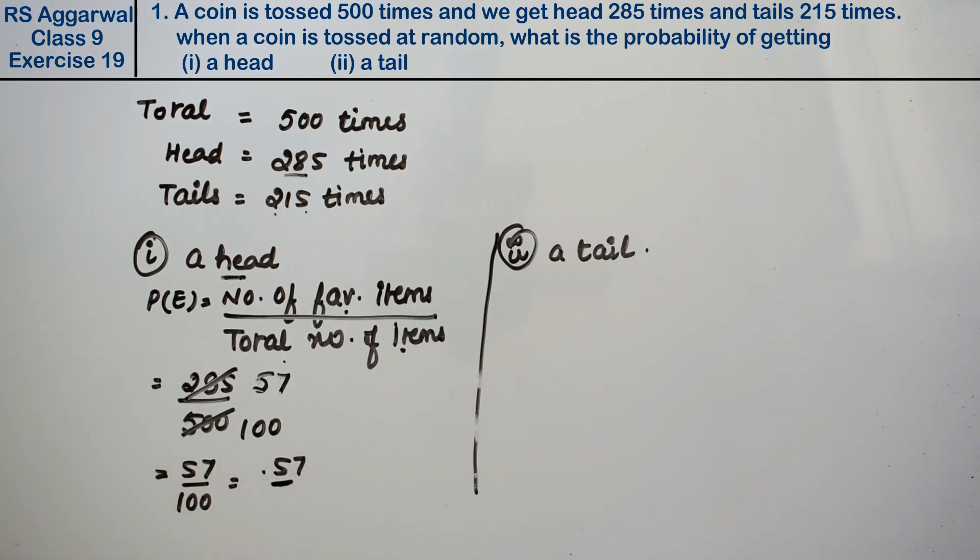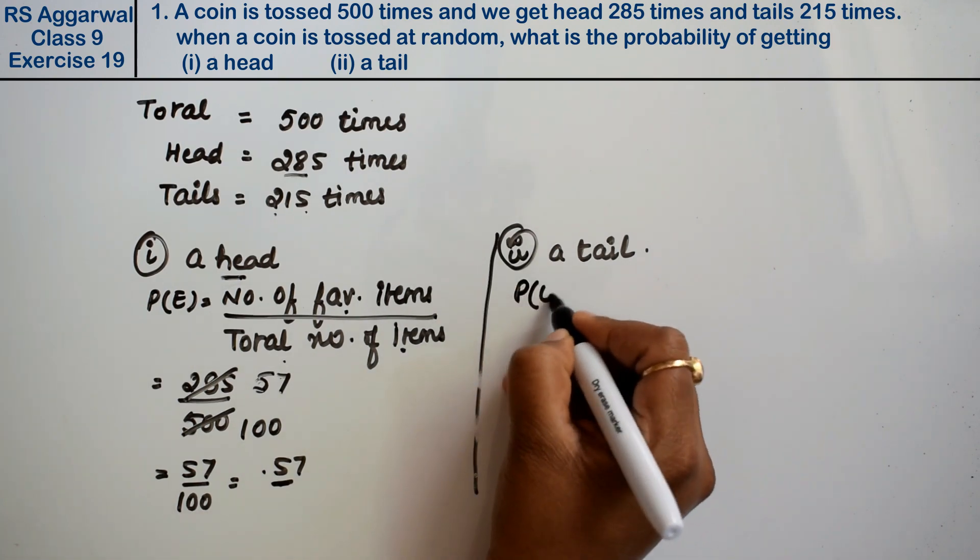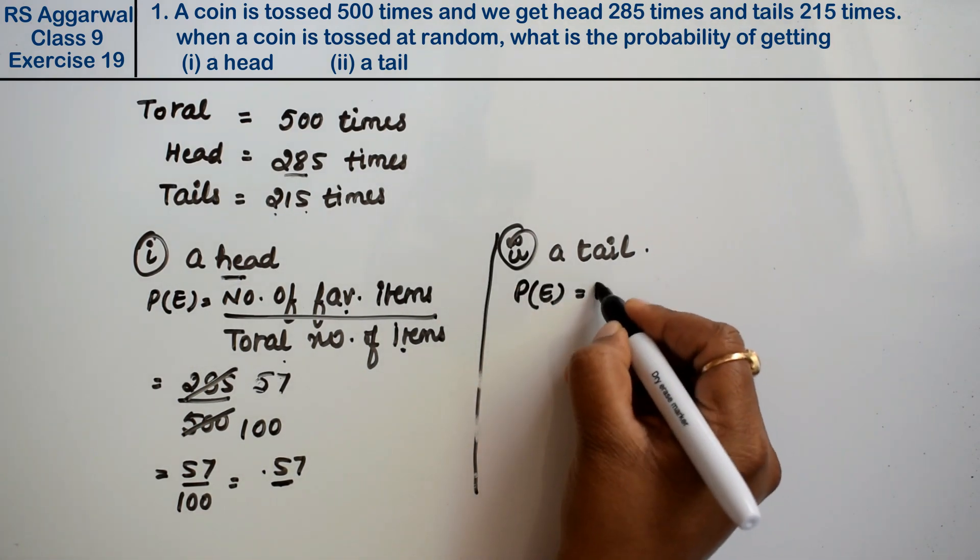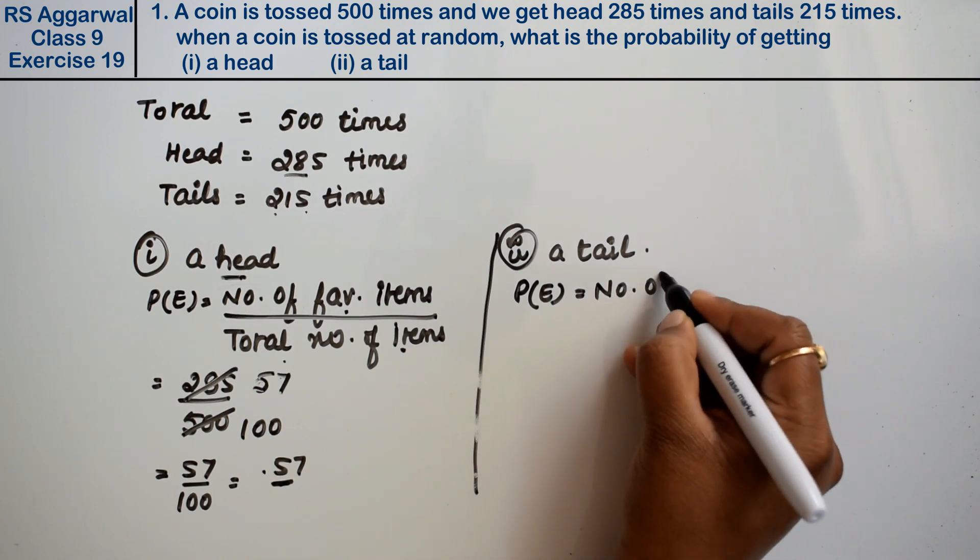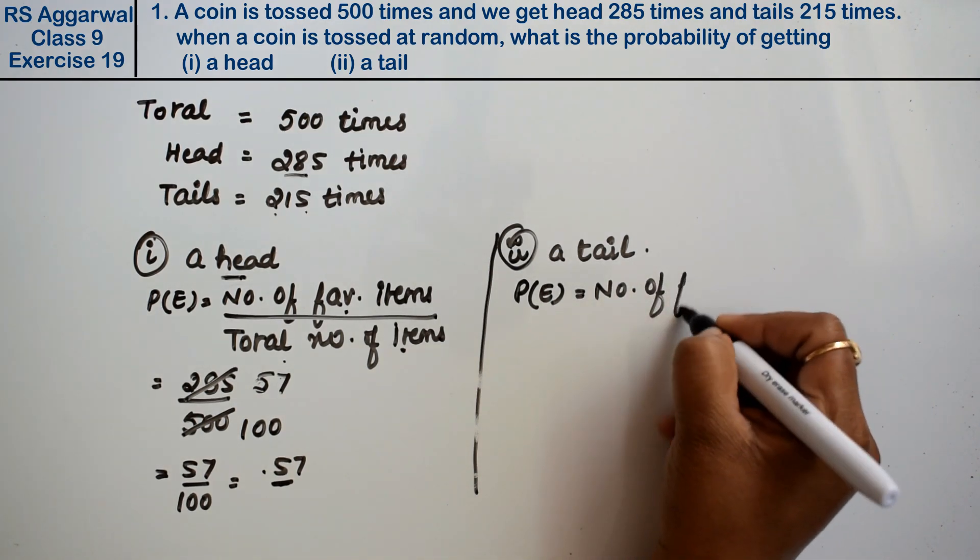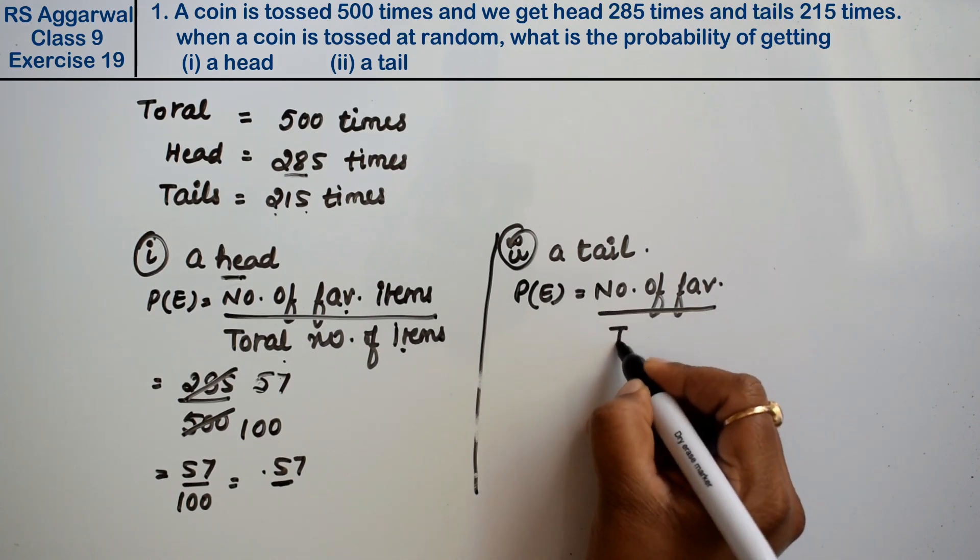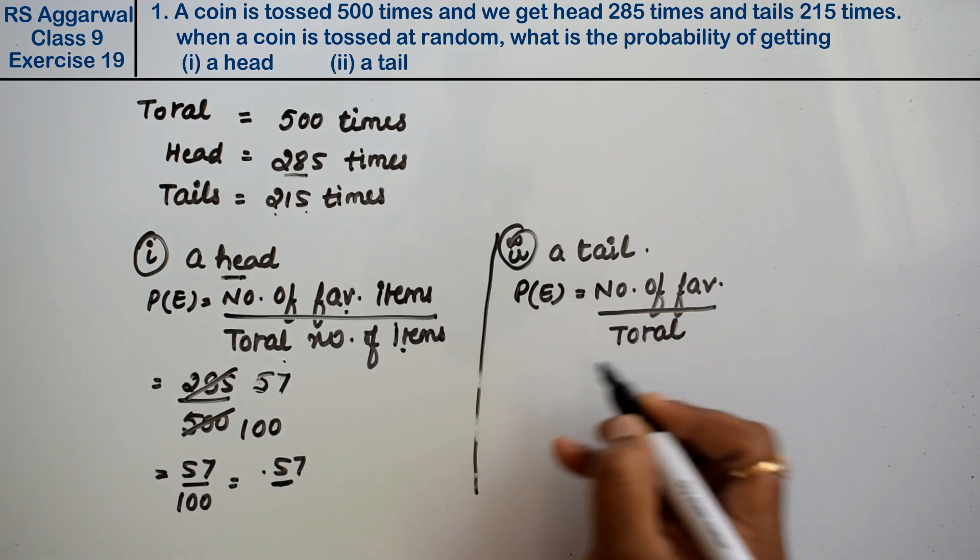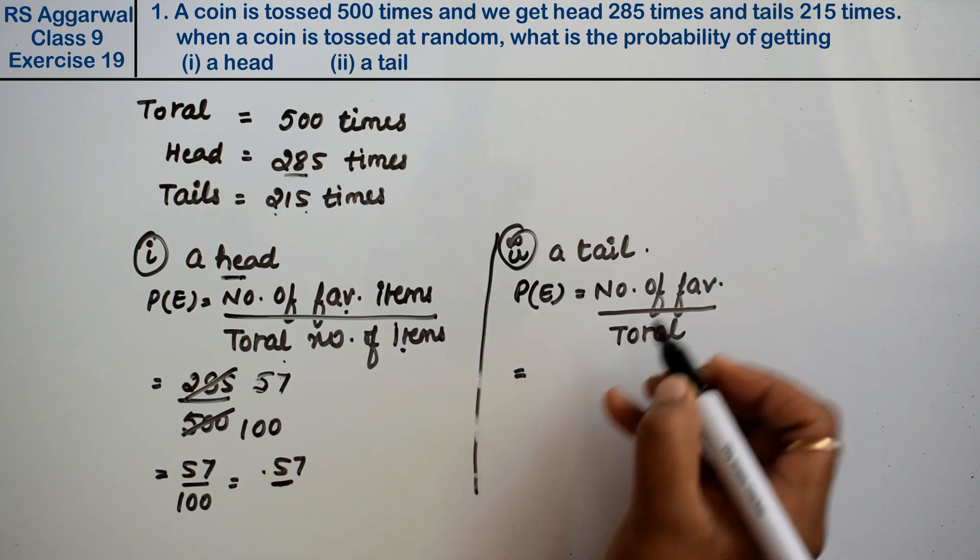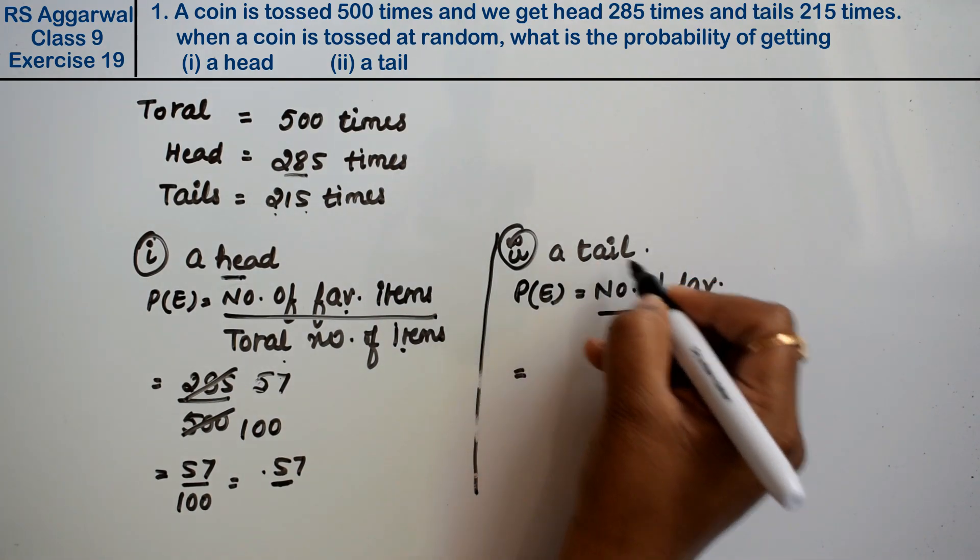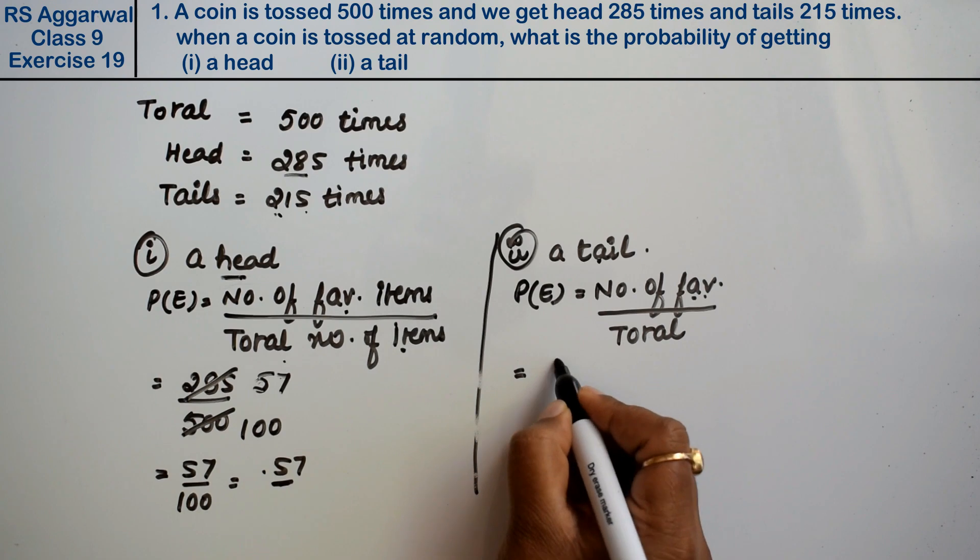Now in the same way, what is the probability of tail? P(E) is the same formula: number of favorable divided by total number of items. The favorable outcome is tail, so what is the probability of tail?